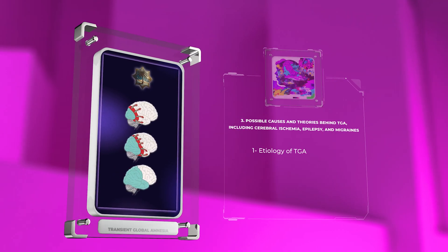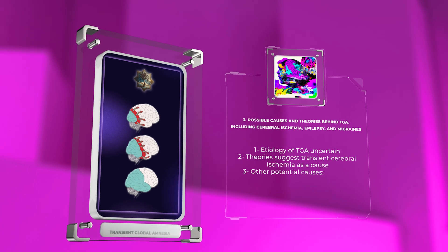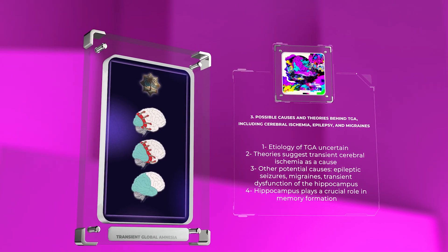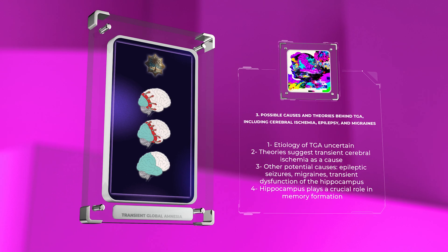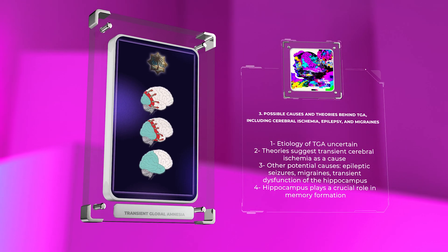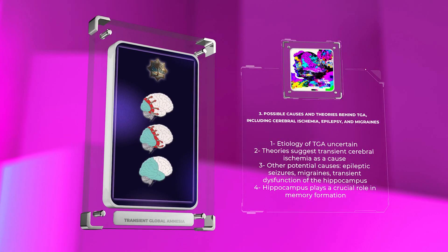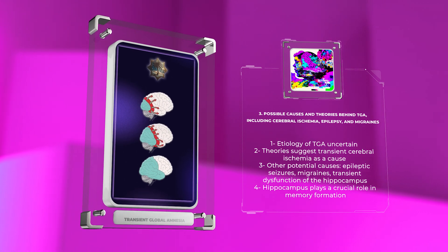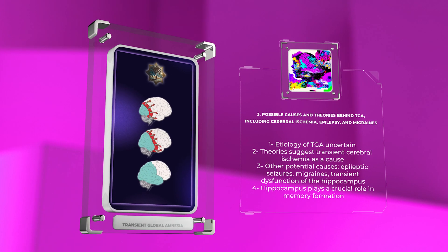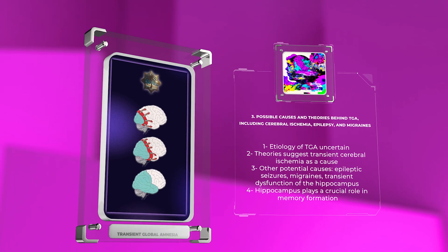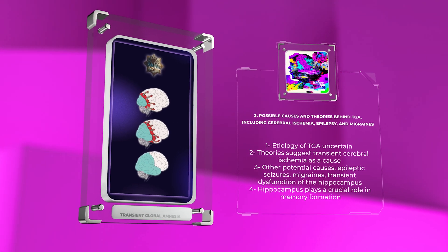The exact etiology of TGA remains uncertain; however, various theories have been proposed. One prominent theory suggests that TGA occurs due to transient cerebral ischemia, often caused by venous congestion or arterial hypoperfusion. Other potential causes include epileptic seizures, migraines, and transient dysfunction of the hippocampus, which plays a crucial role in memory formation.